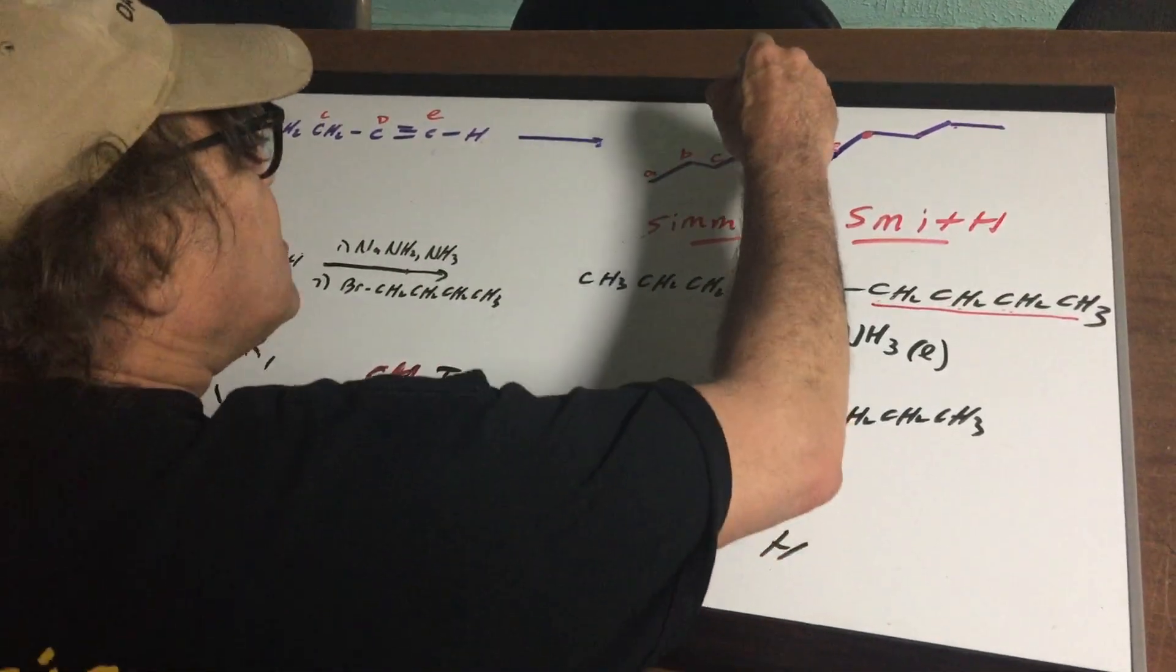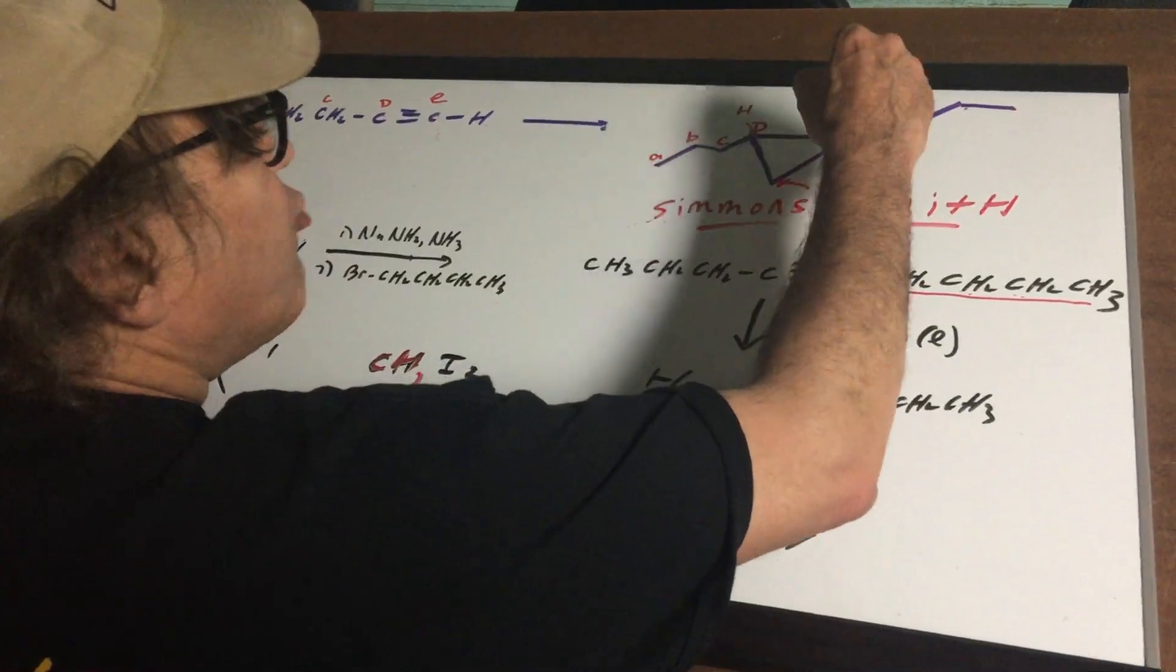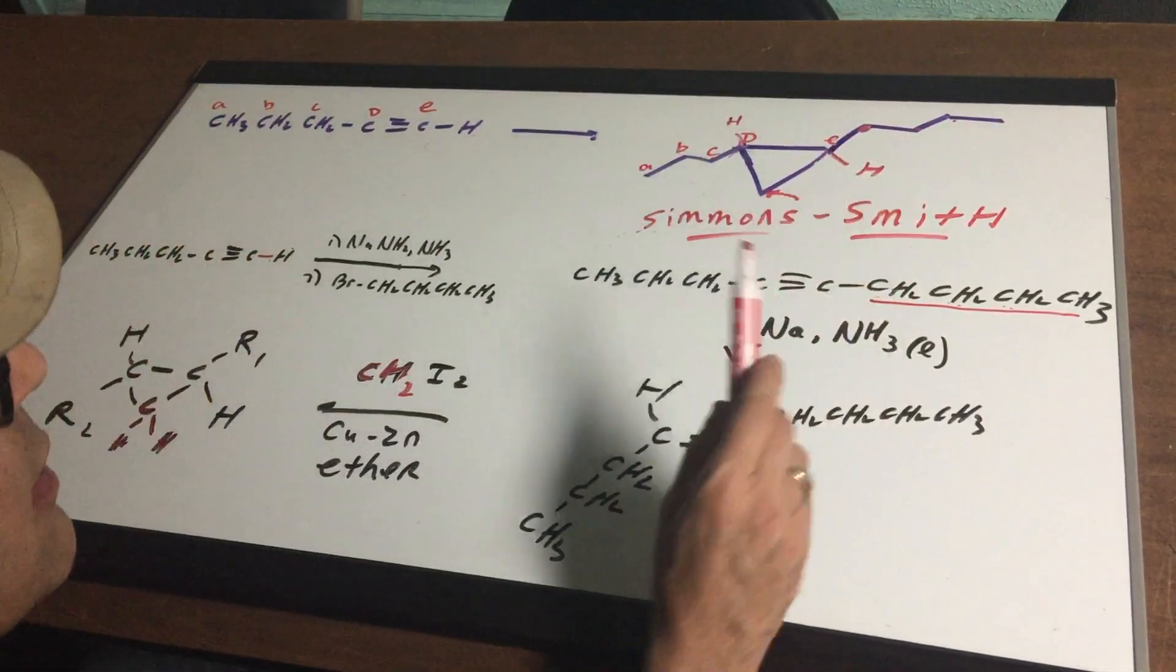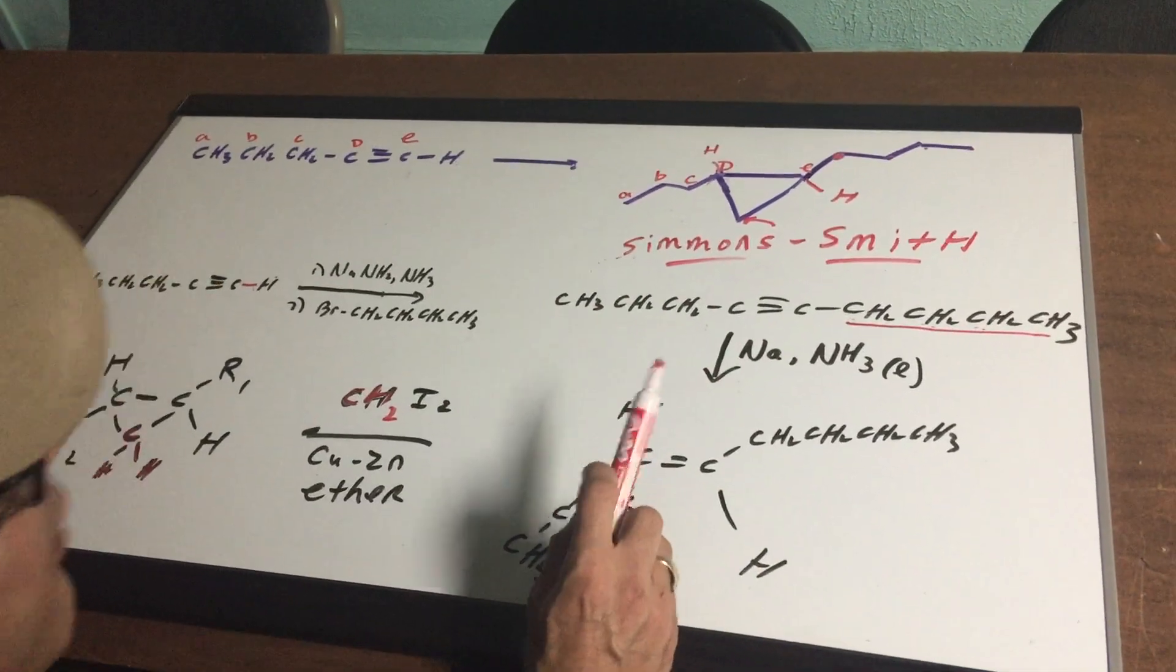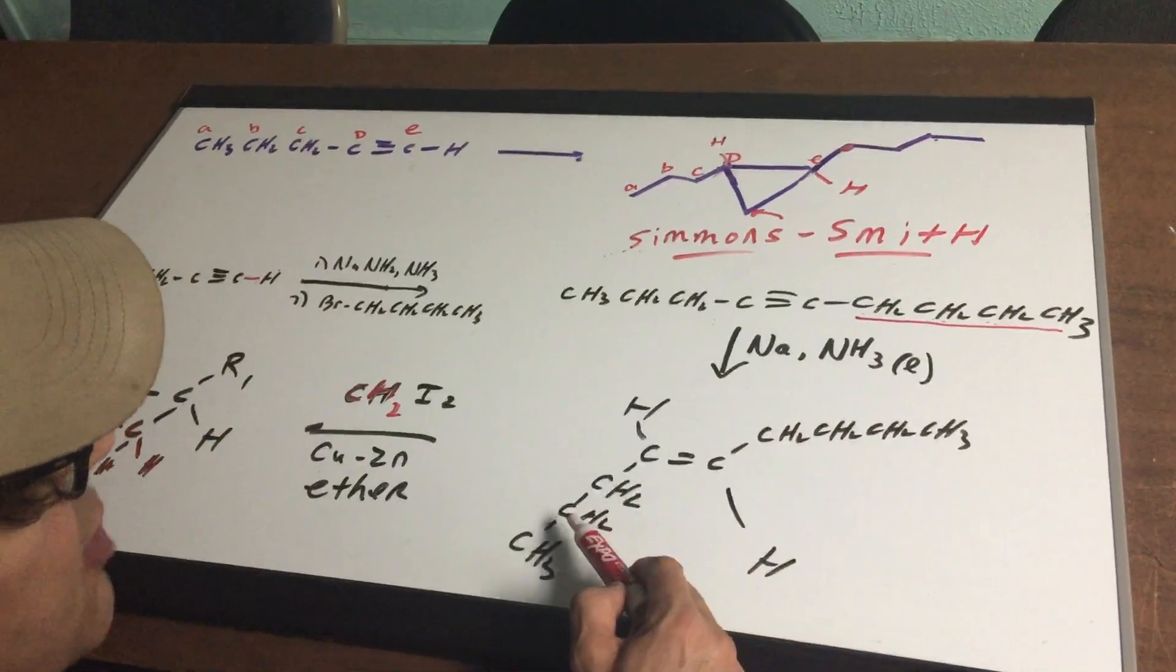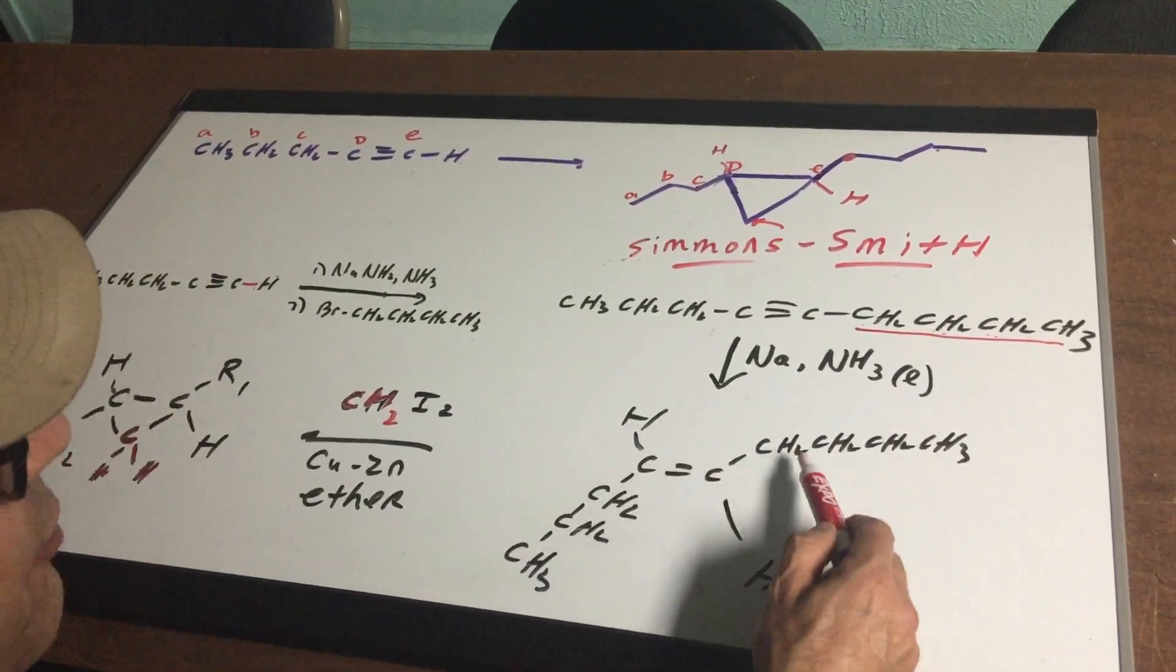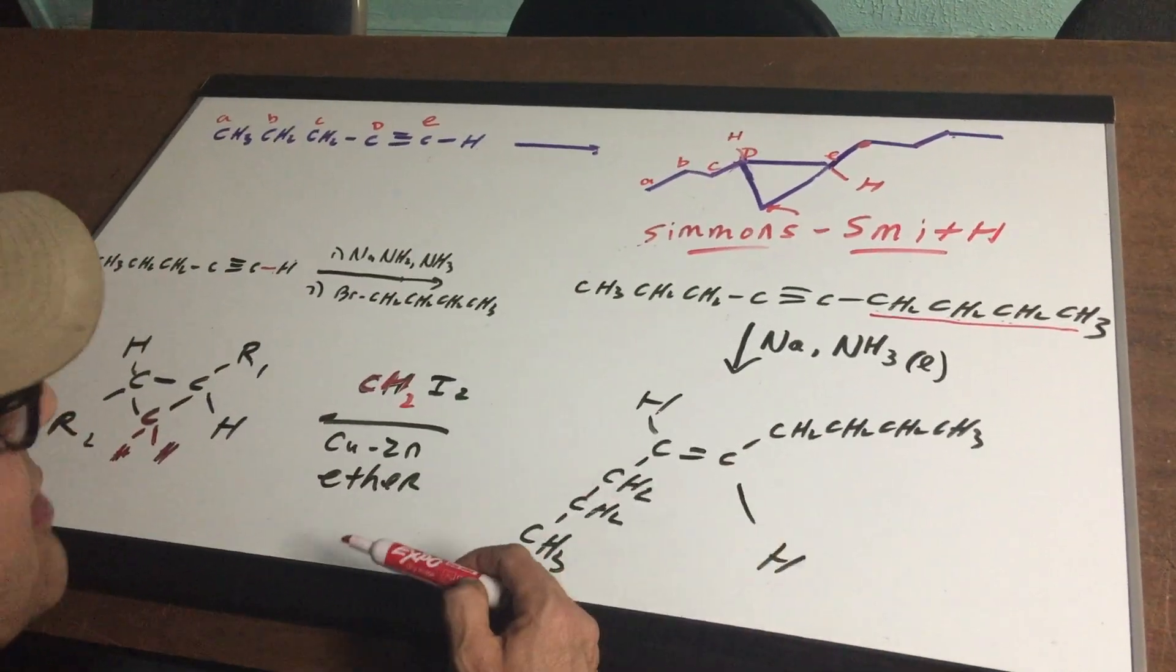The next thing I do is if you put the H's in you would see that these groups, this is above an H and this is below an H and this is above an H. That means that the relationship here is trans. So I got to maintain that relationship stereochemically. So I'm gonna use sodium in liquid ammonia and that's gonna put the two groups opposite each other or in the trans or more correctly the E configuration. Notice the H's are opposites and the R groups are opposites.